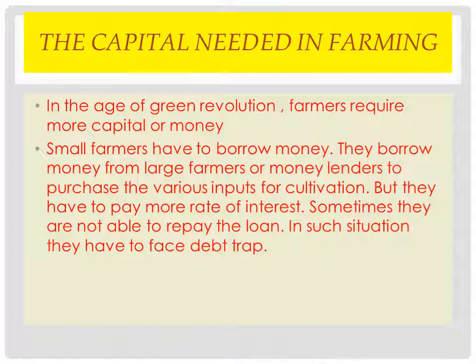In the age of the Green Revolution, farmers require more capital or money to invest in their farming. In Palampur there are two types of farmers: small farmers, and medium and large farmers.